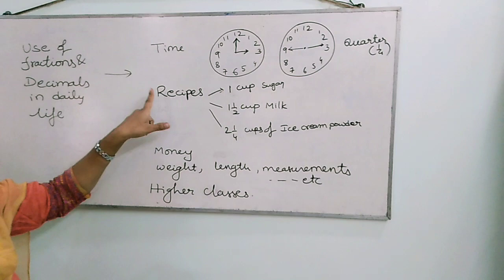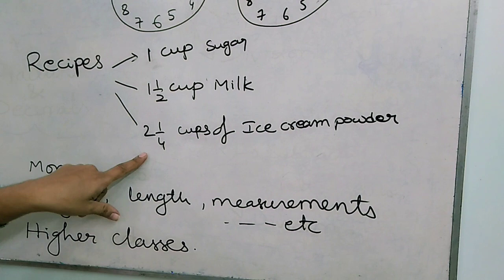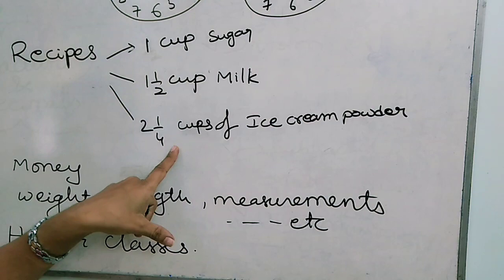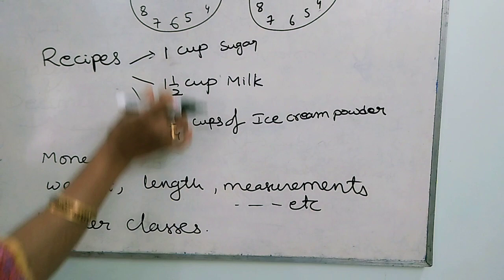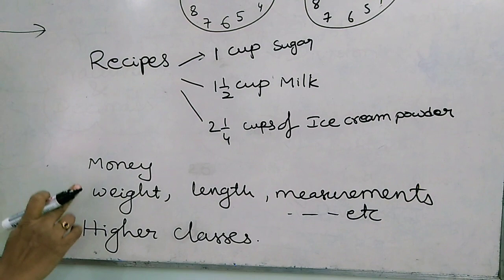Next, if you see recipes - some recipes show ingredients in this manner: 1 cup of sugar, 1 and 1 half cup of milk, 2 and 1 by 4 cups of ice cream powder needed to prepare ice cream. Like that, you can observe the ingredients list for recipes. Even decimals are also useful in money.